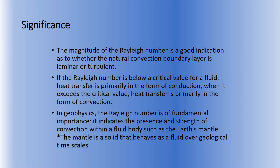Now, coming to the significance of the Rayleigh number: it is very important when we deal with natural convection and when we talk about the boundary layer of a fluid — whether it is laminar or turbulent. We can determine this through the Rayleigh number. If the Rayleigh number is below a critical value for a fluid, then heat transfer will be mainly in the form of conduction. If it exceeds the critical value, heat transfer will be mainly due to convection.